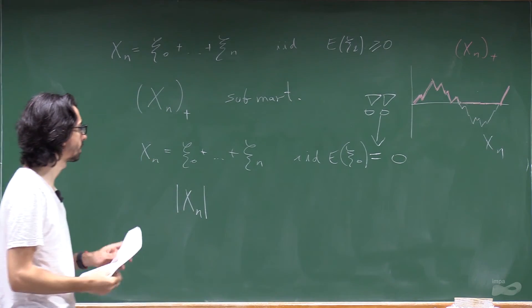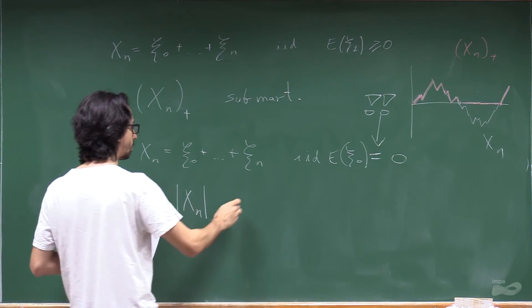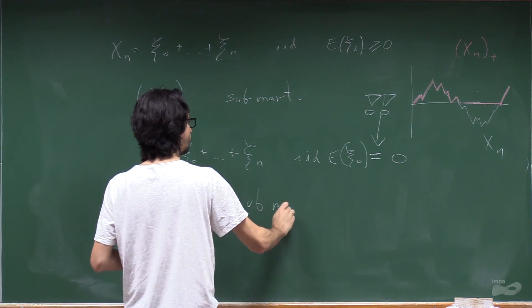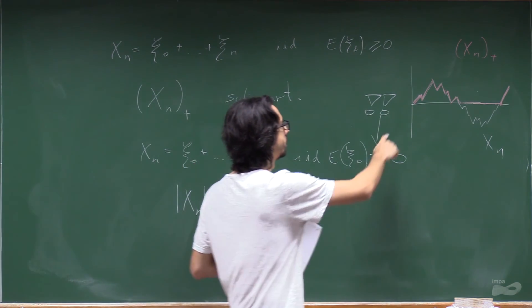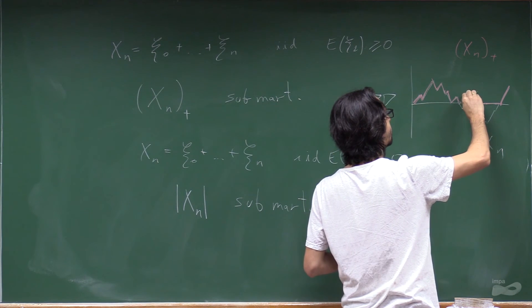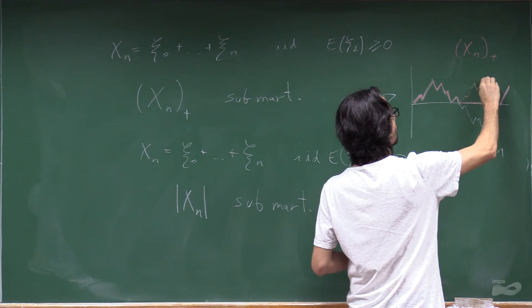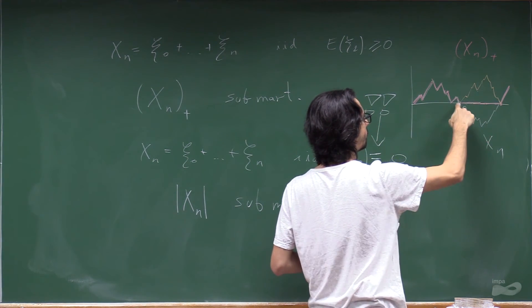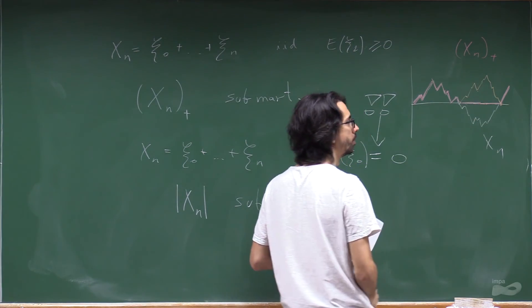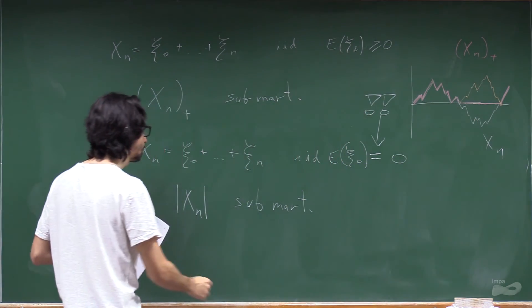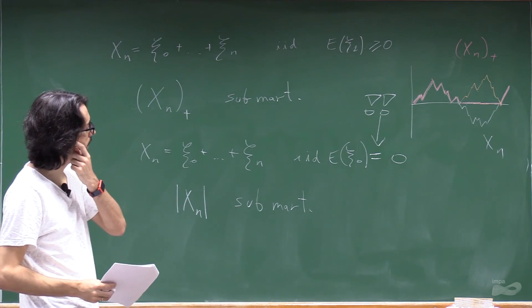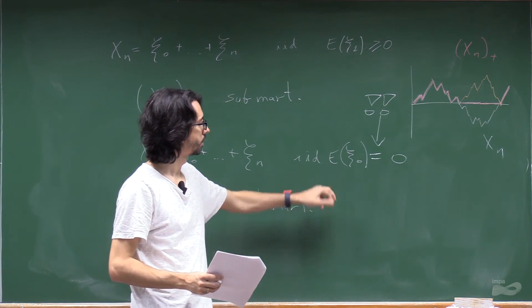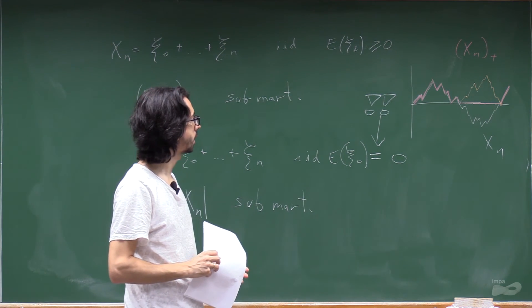It's very important that the expectation is zero for this to be a sub-martingale. So now this game is the same as the purple one, but it's even better because when the random walk goes down, you go up. So the orange game is also sub-martingale. But in this case, you actually need the expectation to be exactly zero.